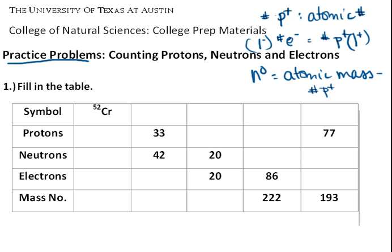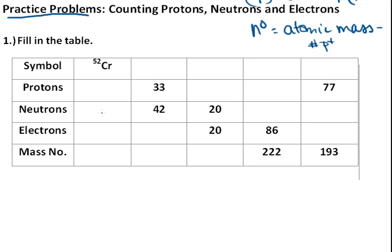And so we're ready to get started and fill in this table. So in the first one, we're given chromium-52. This top number is the atomic mass, or the mass number.